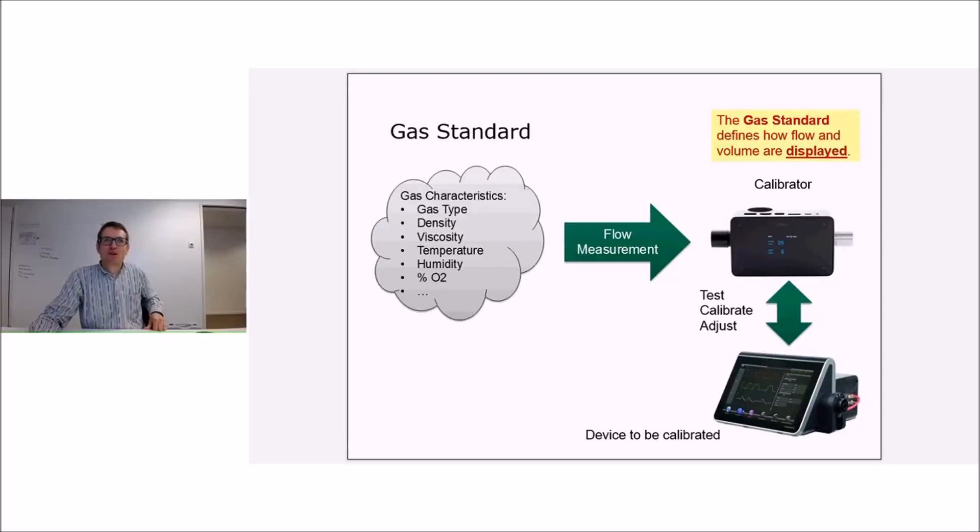So all these different properties—and what also comes, I mean, these devices, they're designed for air and oxygen. So if you measure another gas, for example nitric oxide or nitrogen or anything like that, you have to tell the PF300 that it is a different gas with different viscosity and all that kind of thing.